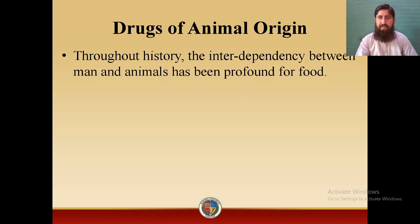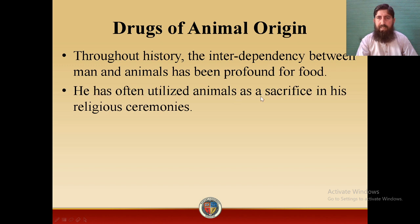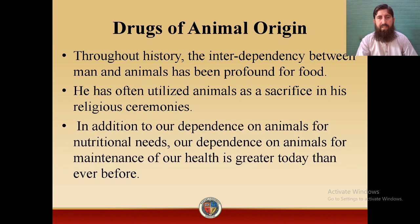Drugs of Animal Origin. In the previous semester, we studied Drugs from Plant Origin — we studied 12 different families from an analytical point of view. In this lecture, we will study Drugs of Animal Origin. Throughout history, the interdependency between man and animal has been proven for food. In the beginning, man used animals for food purposes and as a sacrifice in religious ceremonies, as Muslims do in Eid al-Adha. Nowadays, man is depending on animals for maintenance of his health more than ever before.